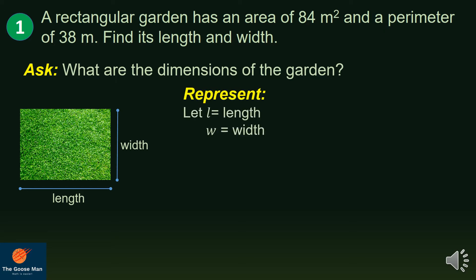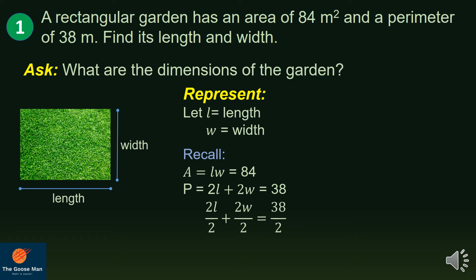We will represent L as equal to length and W as equal to the width. Take note that area is equal to length times width, and according to the problem, it is equal to 84 square meters. Also, our perimeter is equal to 2L plus 2W, which equals 38 meters. Dividing both sides by 2, we get length plus width equals 19.